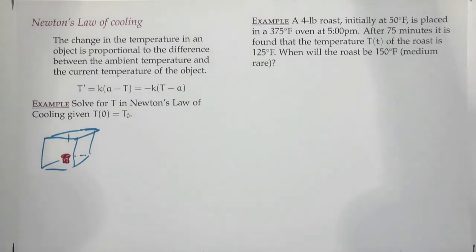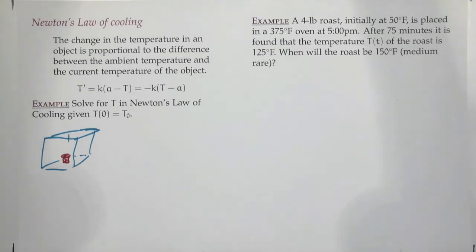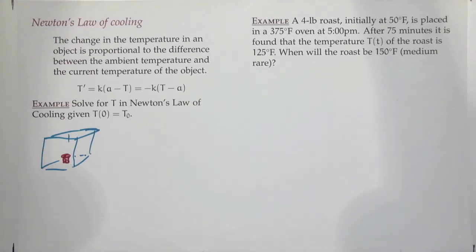Over time, the object will cool off and become the ambient temperature of its environment. Newton's law of cooling says the change in temperature is proportional to the difference between the current temperature of the object and the temperature of the space it's in. If they're very far apart, temperature changes quickly; if close together, changes slowly.